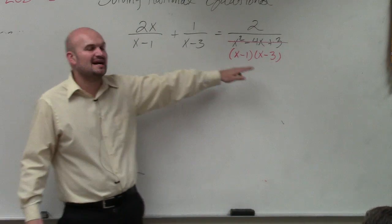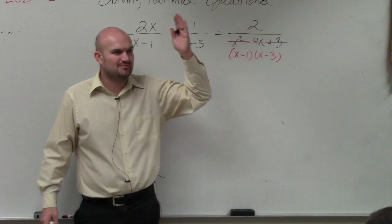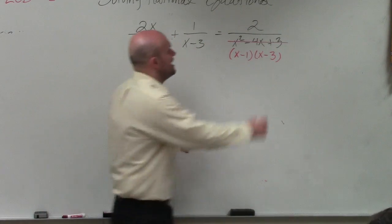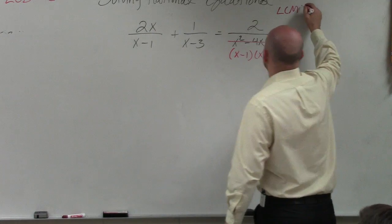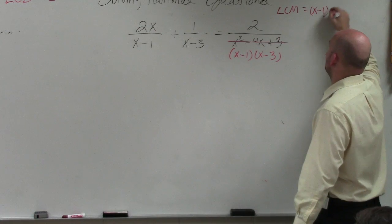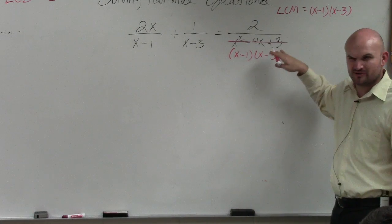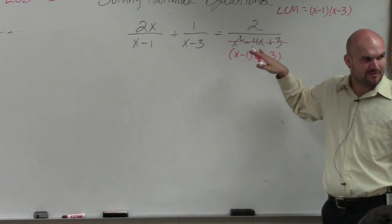But just factor that out, because what that does is that helps us out. Because if you guys remember in the last one, remember that one where all we did was to find the LCM, we just multiplied every single denominator, right? Well, you would not want to say your LCM is going to be x minus 1 times x minus 3 and then multiply x squared minus 4x plus 3. Can you guys see what problem that would be, right?